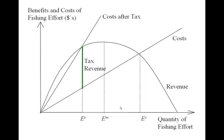A second option is to tax effort. Instead of just requiring fishermen to pay their operating costs, a tax is applied so that every unit of effort also requires a payment to the government. Fishermen now face a higher cost curve and the open access equilibrium shifts to the economically efficient level of effort if the tax is set correctly. The good news is that instead of creating waste, we create tax revenue that could be used for schools, hospitals, or other public works — an improvement, though the fishermen themselves still aren't capturing the rents.